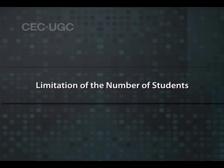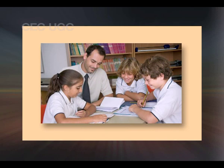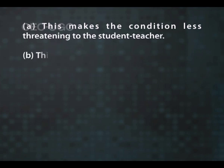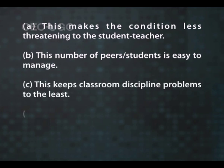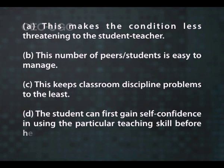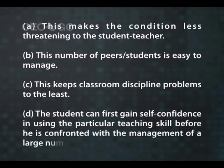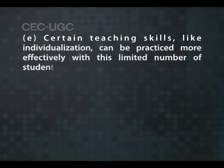Limitation of number of students: The number of students in a micro-teaching situation is approximately 5. The reasons are: this makes the condition less threatening to the student teacher; this number of peers or students is easy to manage; this keeps classroom discipline problems to the least; the student can first gain self-confidence in using the particular teaching skill before being confronted with the management of a large number of pupils. Certain teaching skills like individualization can be practiced more effectively with this limited number of students.